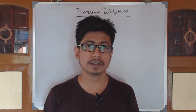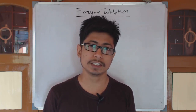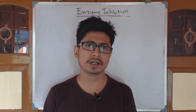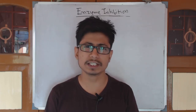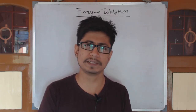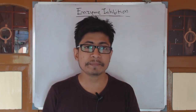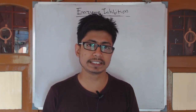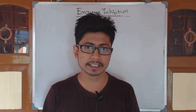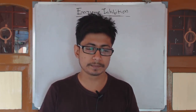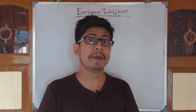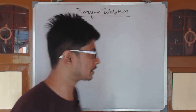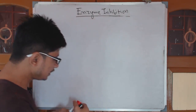Feedback inhibition regulates the production of certain products in our body — that could be metabolic products or any product required in our digestion. Ultimately, feedback inhibition is a system with which the cell regulates the production of some products by the concentration of the product.